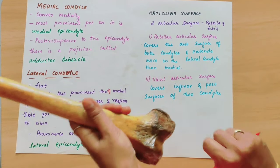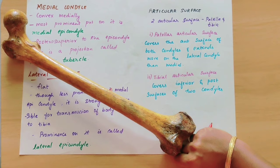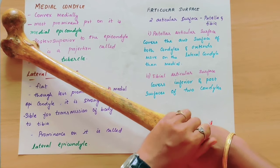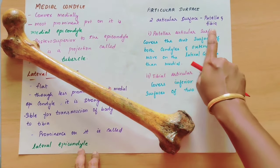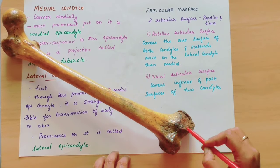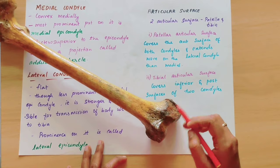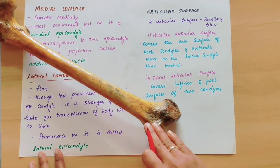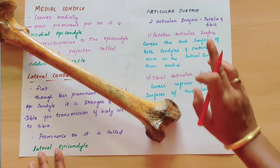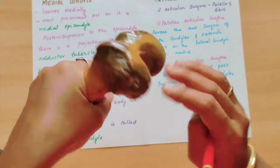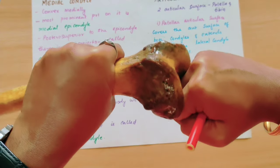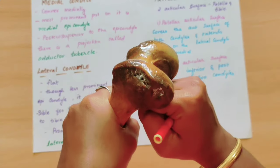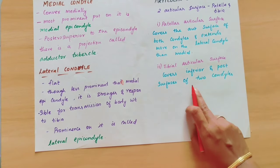Between the two condyles posteriorly is the intercondylar notch or intercondylar fossa. The condyles project backward. The articular surface has two parts: the patellar articular surface, which covers the anterior surface of both condyles, and the tibial articular surface, which covers the inferior and posterior surface of the two condyles.